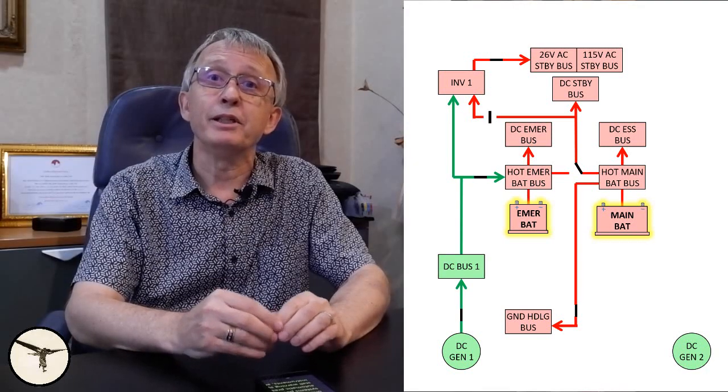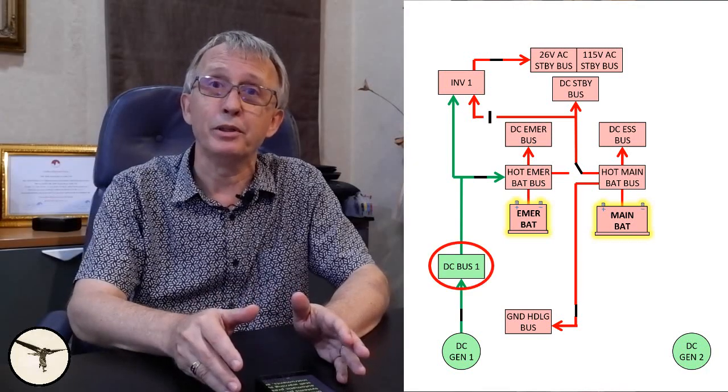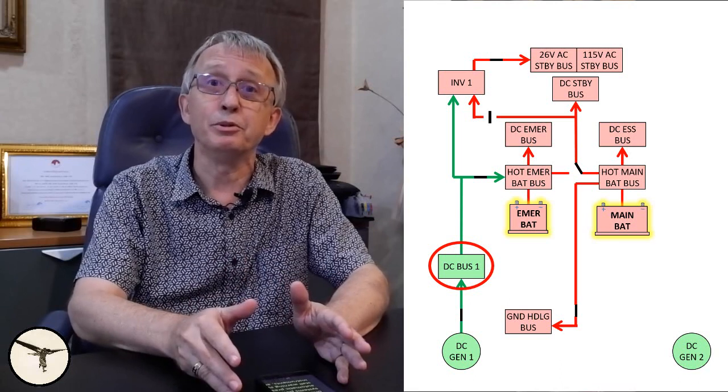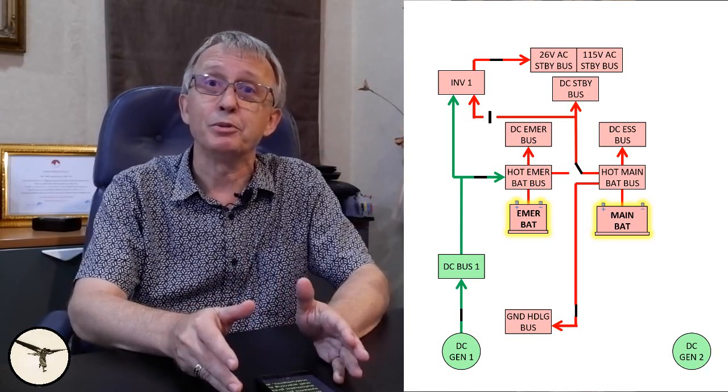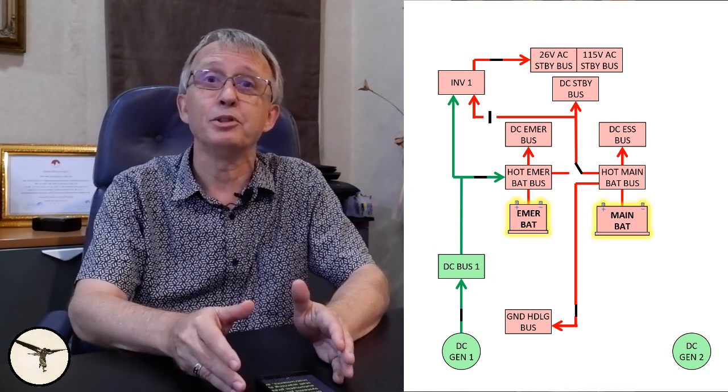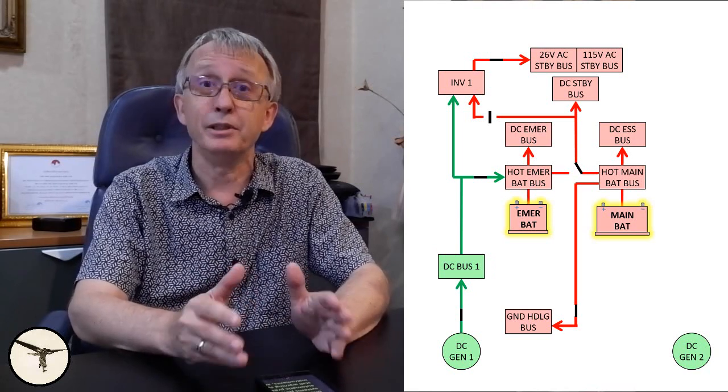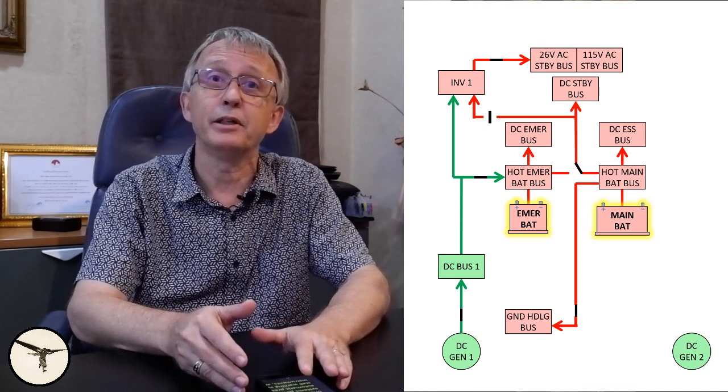DC generator 1 supplies DC bus 1, which is one of the two main bus bars. Some systems powered by DC bus 1 are the automatic pressurization control, the stall warning system, captain instruments, and the weather radar.